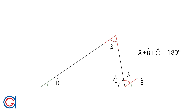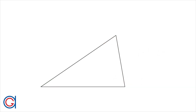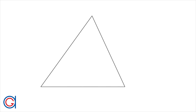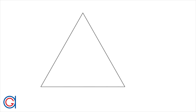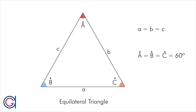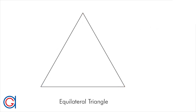So now we are going to classify the triangles according to their sides. The first one is called an equilateral triangle, which name is self-explanatory as the 3 sides are equal and also the 3 angles are equal. Therefore the 3 angles are 60 degrees, because the 3 angles add up to 180 degrees, the important property that we mentioned before.